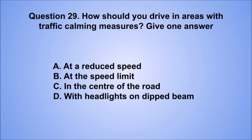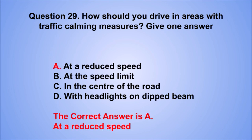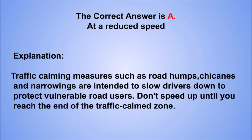Question 29. How should you drive in areas with traffic calming measures? Give one answer. A. At a reduced speed. B. At the speed limit. C. In the center of the road. D. With headlights on dipped beam. The correct answer is A, at a reduced speed. Traffic calming measures such as road humps, chicanes and narrowings are intended to slow drivers down to protect vulnerable road users. Don't speed up until you reach the end of the traffic-calmed zone.